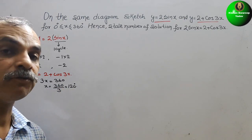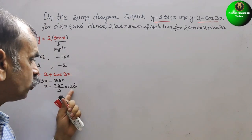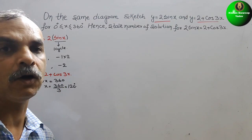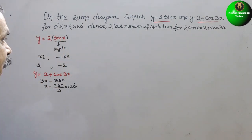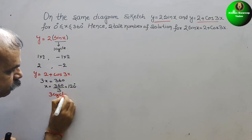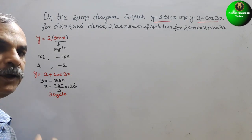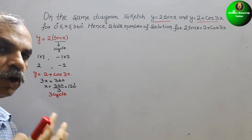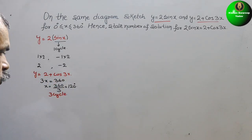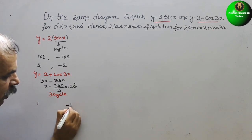We need to complete one cycle of cosine in 120°. That means we will get three cycles of the cosine wave across the full 0° to 360° range.